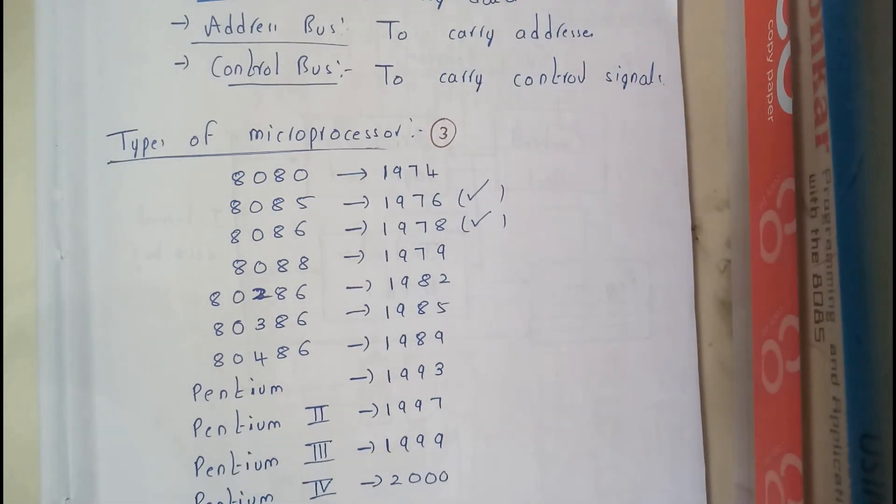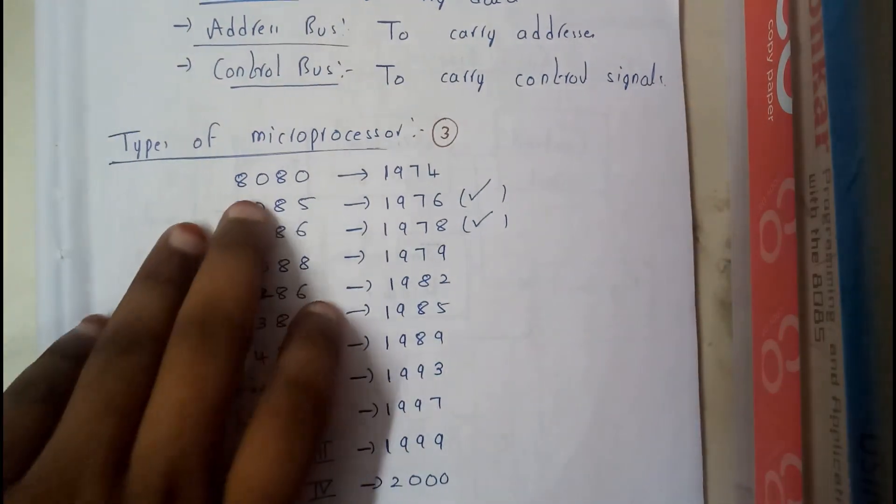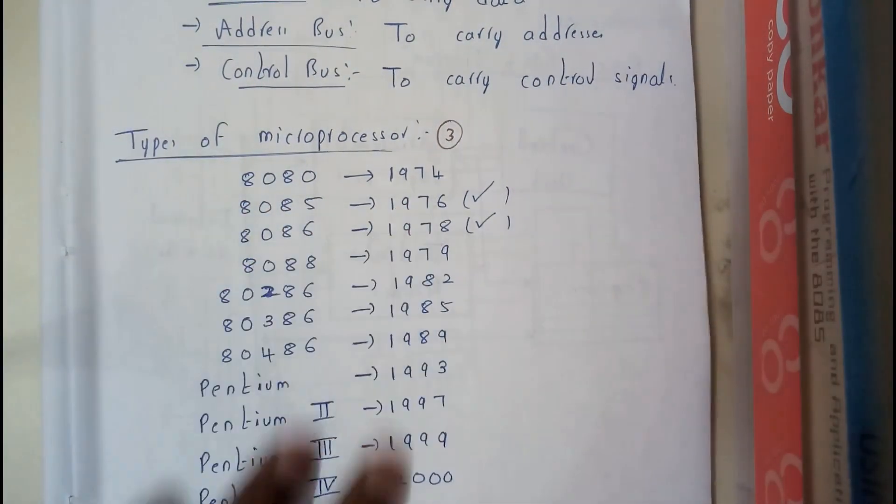Hello guys, we are back with our next tutorial. In this tutorial let us see the most important types of microprocessors. The first microprocessor is 8080, it was invented in this year.